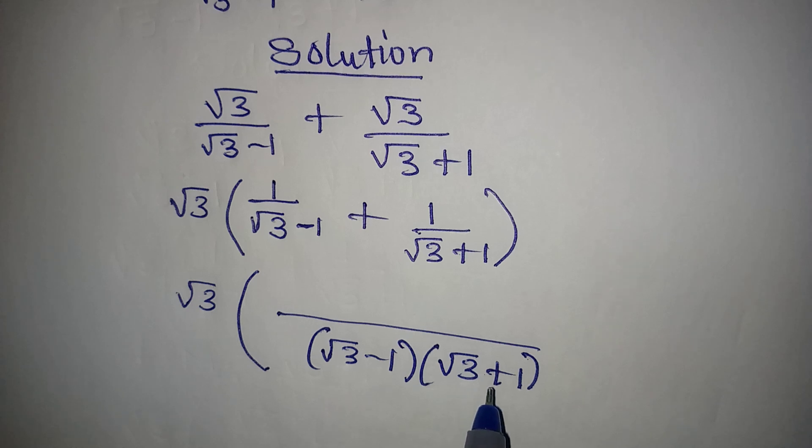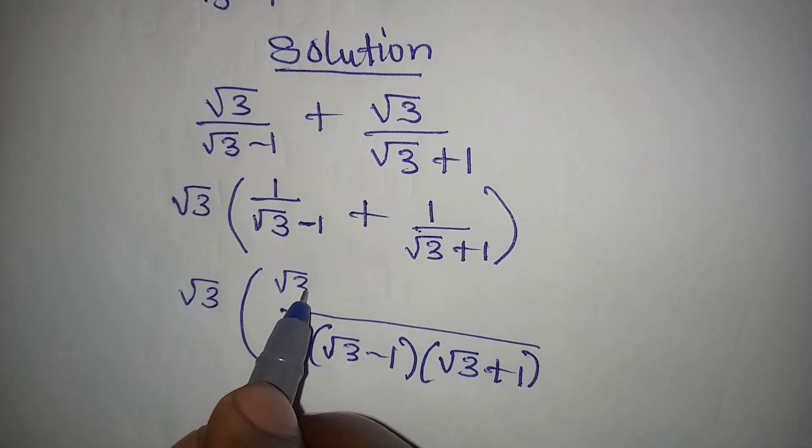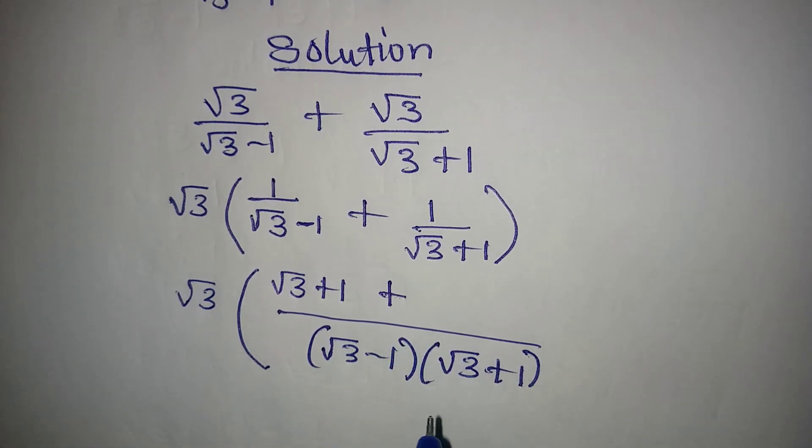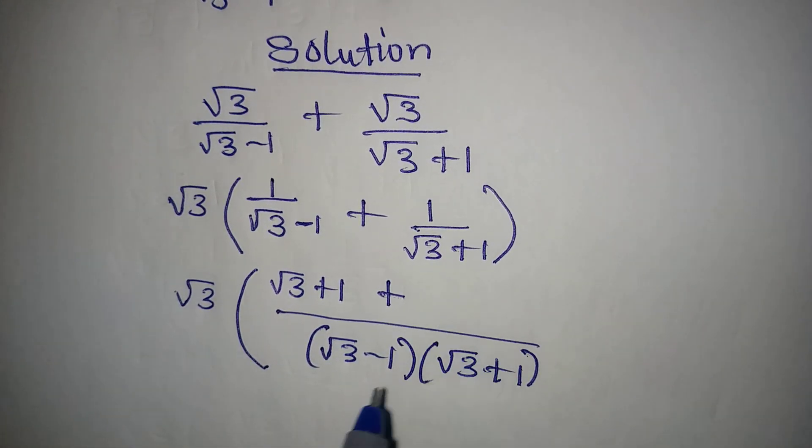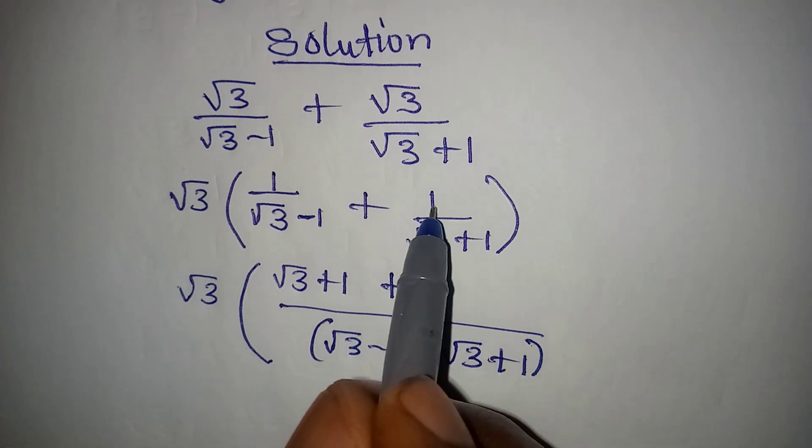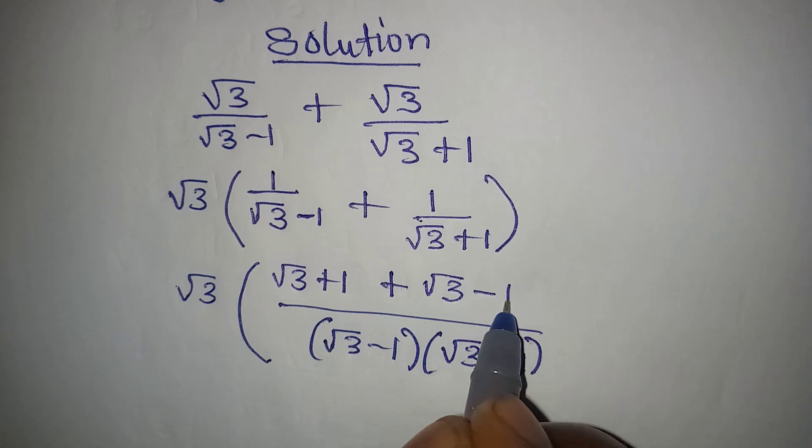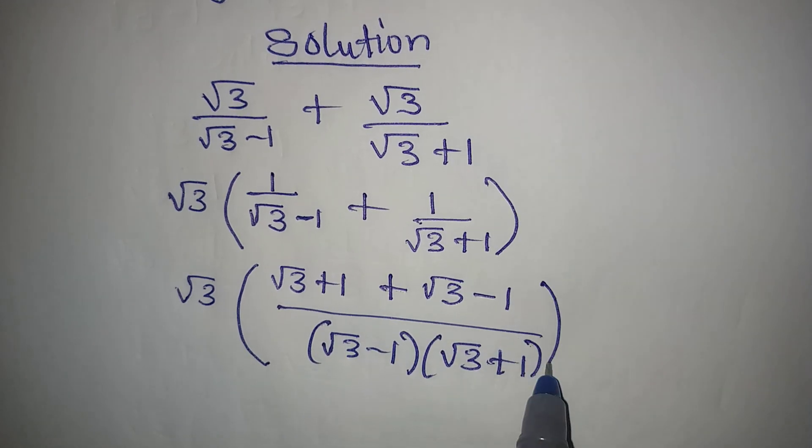If you divide the whole of this by this, this will be left. This times 1 will give for the same root 3 plus 1, then plus divide this by this, this will be left, so times 1 we have this root 3 minus 1.